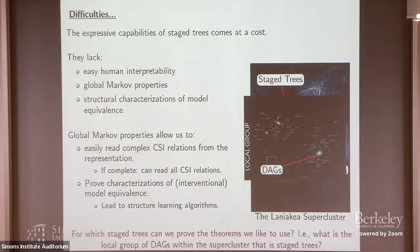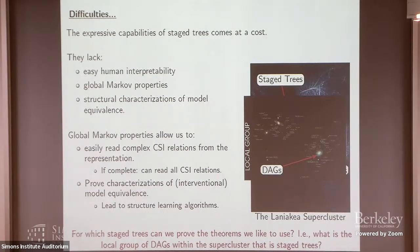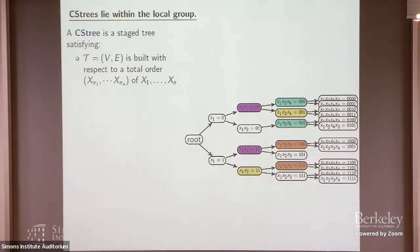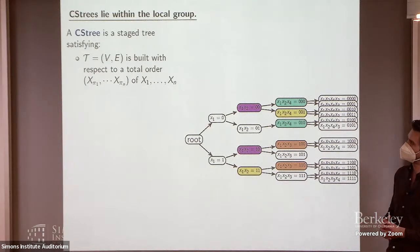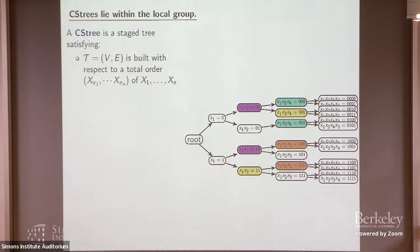For which stage trees can we prove the theorems that we like to use? Where can we get these nice global Markov properties that lead to structural characterizations of interventional model equivalents? The claim is that at least one family that we can identify exists within this local group around DAGs. This is a set of models that we're currently calling CS trees. To define this family, we have to restrict the stage tree models and start by doing away with some of the context-specific things we were looking at, but hopefully we'll see natural roads for bringing some of this complexity back in.